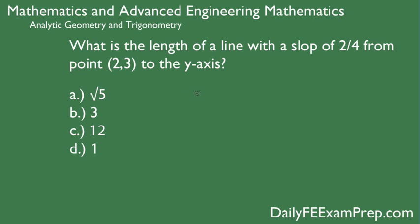Now let's find the general form equation of the line. We've got y equals our slope, which is 2 over 4x plus 2, which is the value that we just solved for. So our general form equation is y equals 2 fourths x plus 2. Now we want to find the length of the line from point (2,3) to the y-axis.